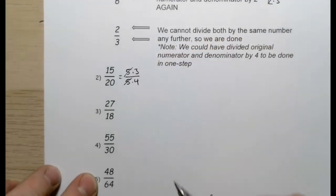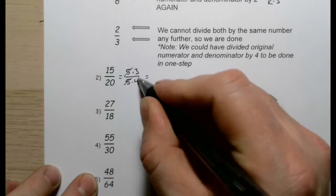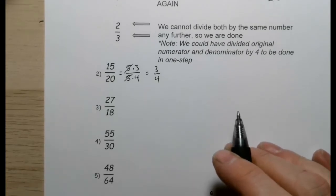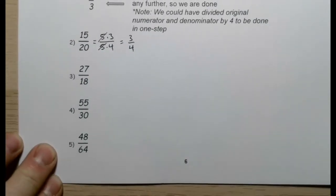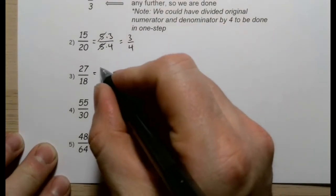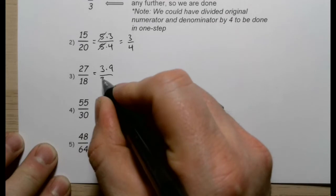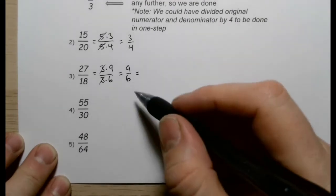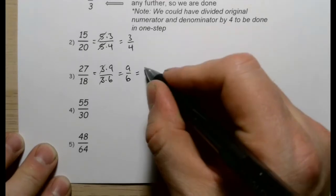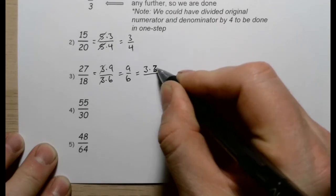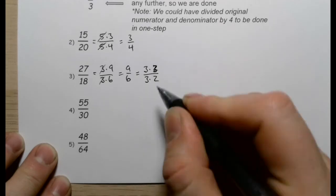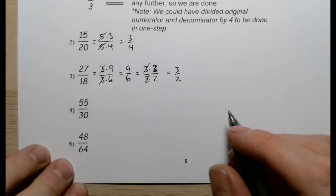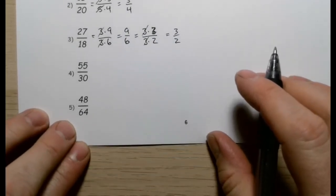For 55 over 30: both are divisible by five — 55 is five times eleven, 30 is five times six — the fives cancel, leaving eleven over six. For 48 over 64: divide by two repeatedly. 48 is two times 24, 64 is two times 32 — cancel twos to get 24 over 32. Then 24 is two times 12, 32 is two times 16 — cancel to get 12 over 16. Then 12 is two times six, 16 is two times eight — wait, that gives six over eight, and further: three times two over three times four — threes cancel, leaving three-quarters. I could have done that quicker, but I still get there.